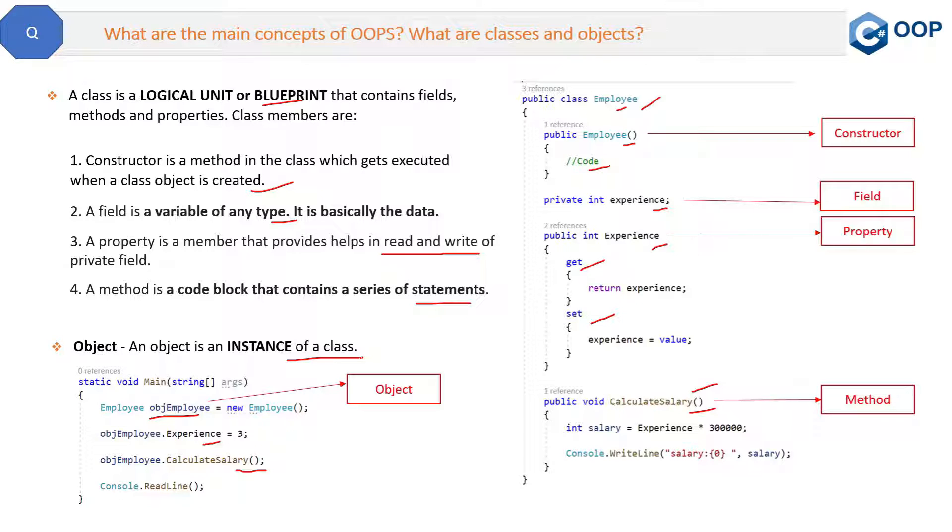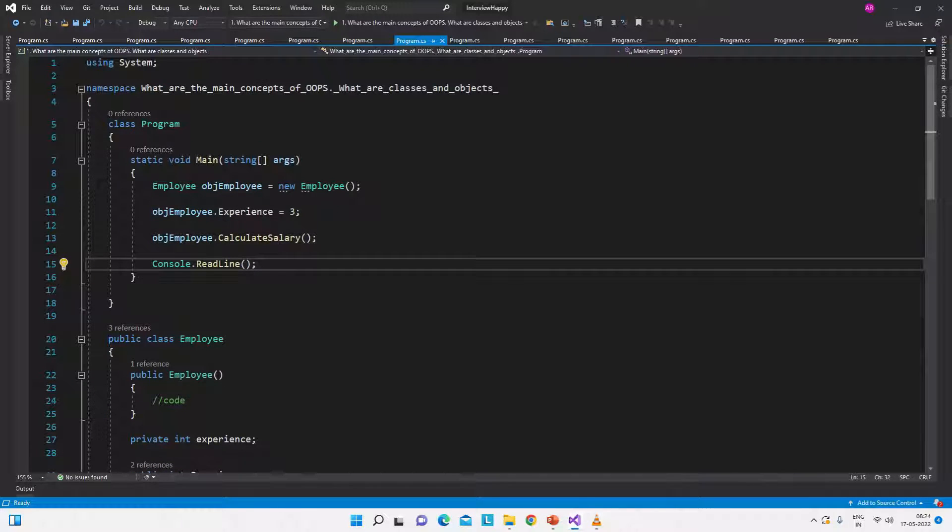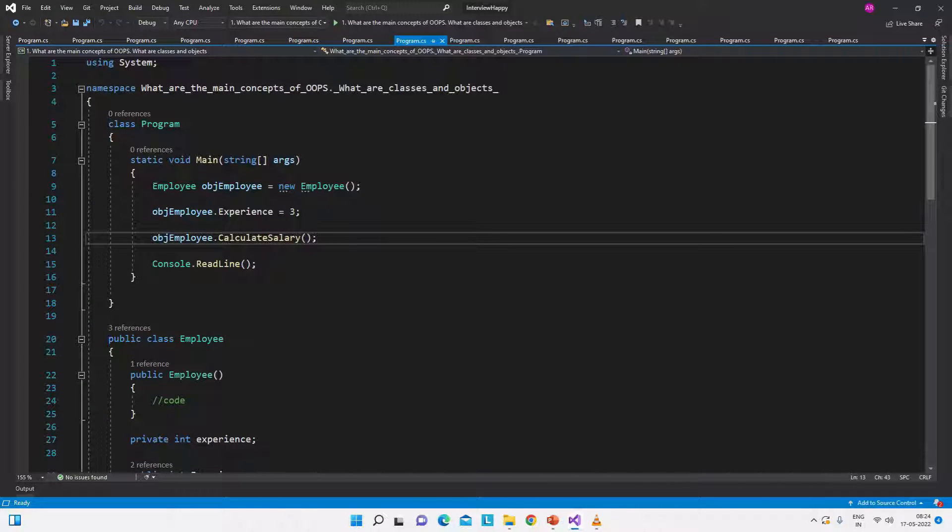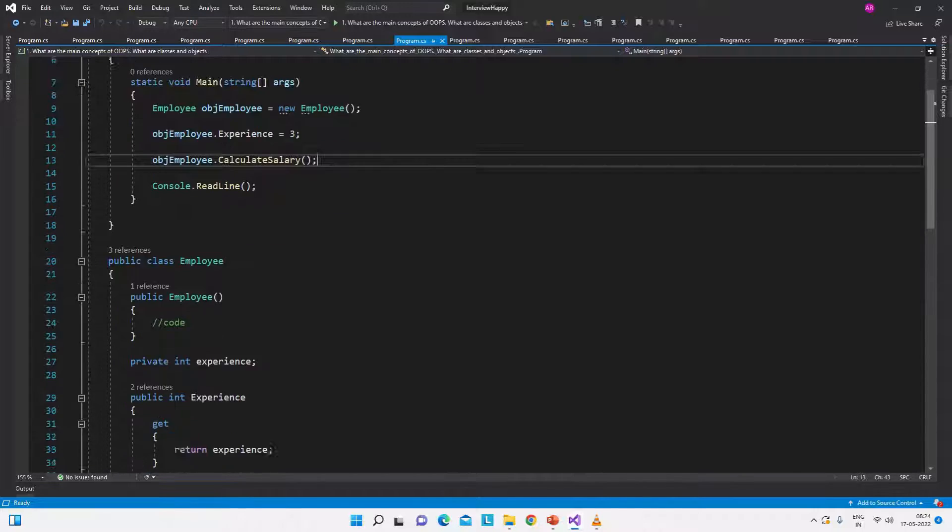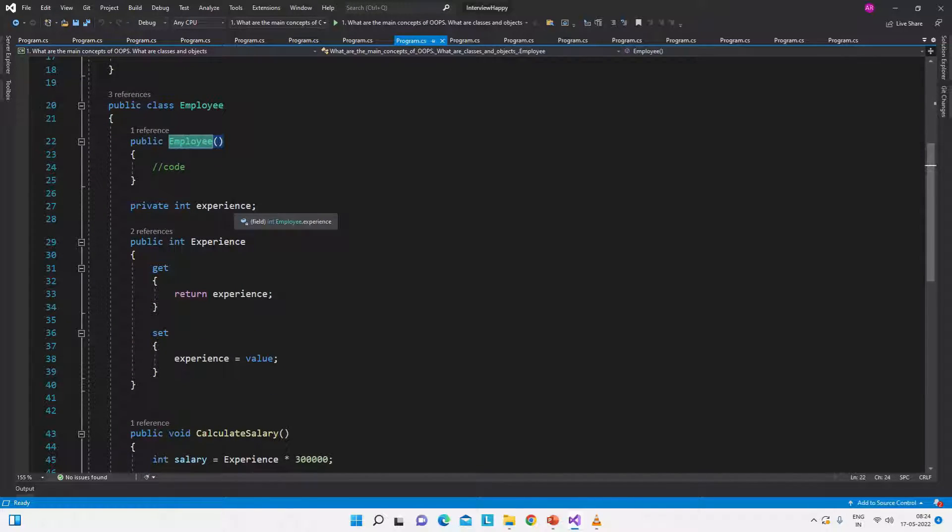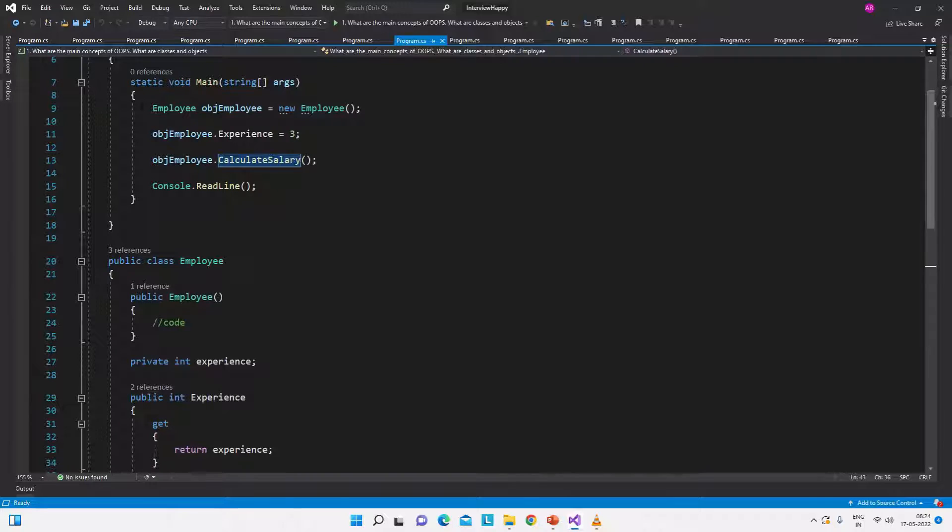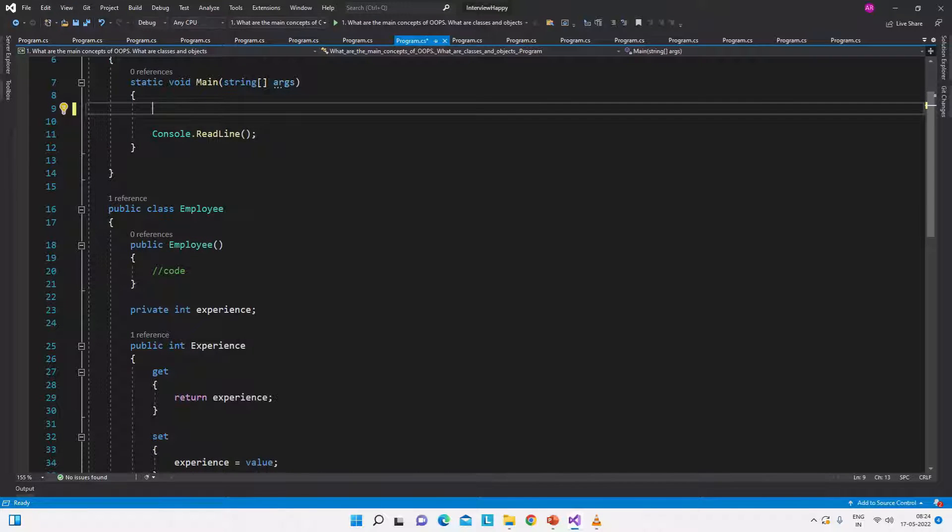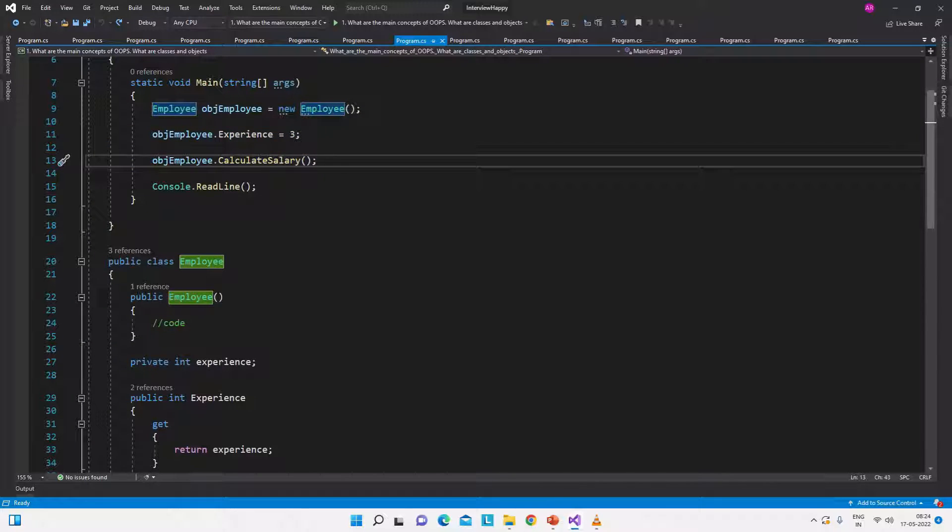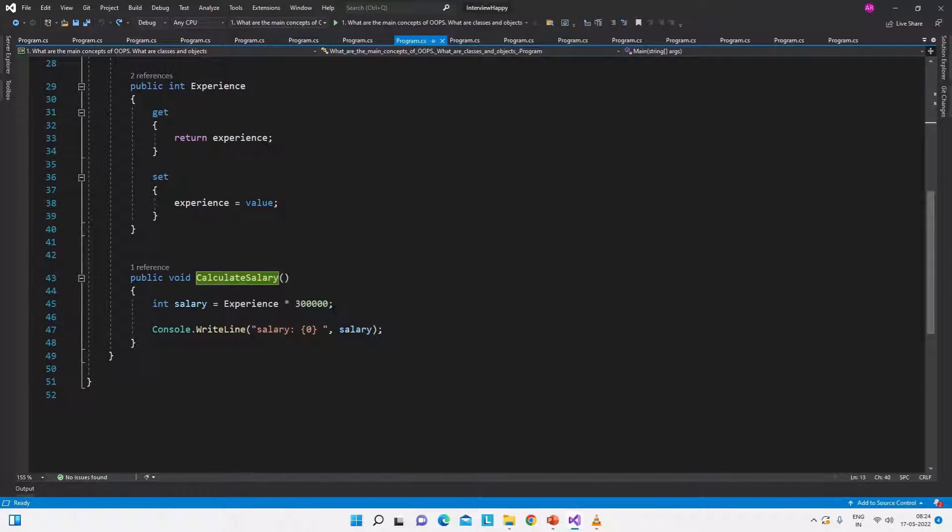Now let's see the same thing in the code. So here is a small console application which has the same code. If you can see, this is the Employee class: constructor, field, property, and the calculateSalary method. Now we have just created the object of this class and have set the property and called the calculateSalary method. If we will not create the object of this class like this, then this class is of no purpose. But we have to use this class, therefore we have created the object.